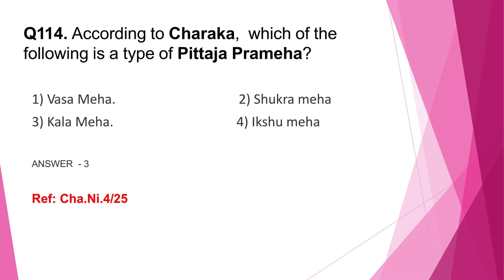Question number 114: According to Charaka, which of the following is a type of Pittaja Prameha — Vasa Meha, Shukra Meha, Kaala Meha, or Ikshu Meha? The correct answer is option 3, Kaala Meha. Vasa Meha is Vataja; Shukra and Ikshu Meha are Kaphaja Prameha. Also note that this is the fourth question coming from the context of Prameha.